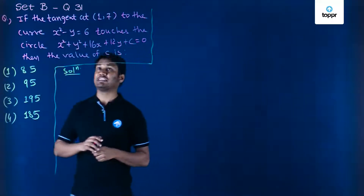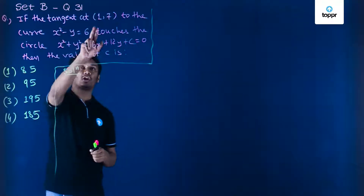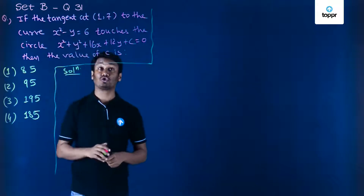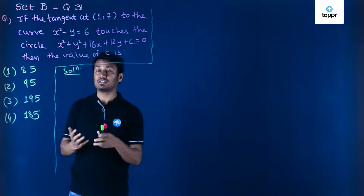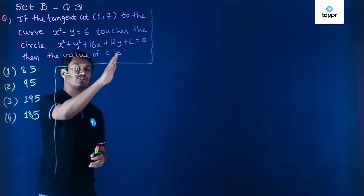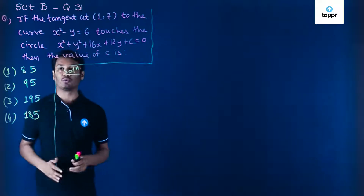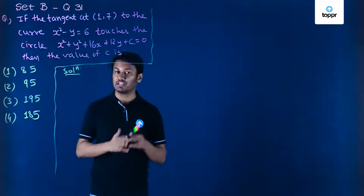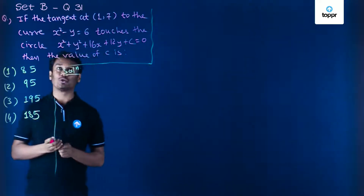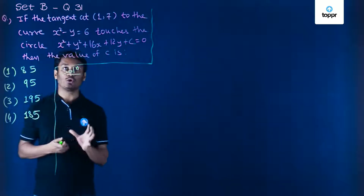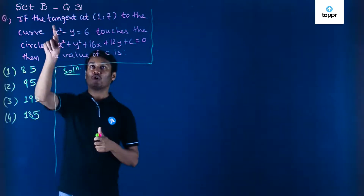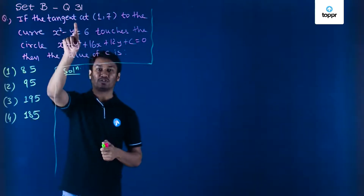The question says: if the tangent at (1,7) to the curve x squared minus y equal to 6 touches the circle x squared plus y squared plus 16x plus 12y plus c equal to 0, then the value of c is dash. Let us see how we solve this question. The very first thing we will do is find out the equation of this particular tangent.